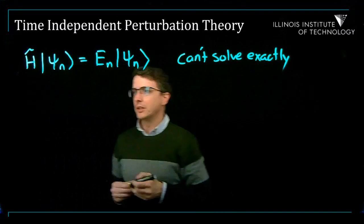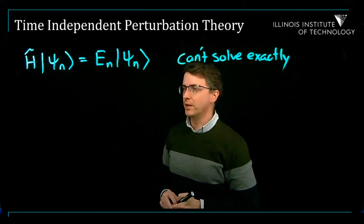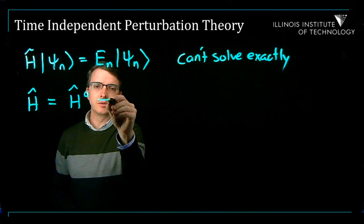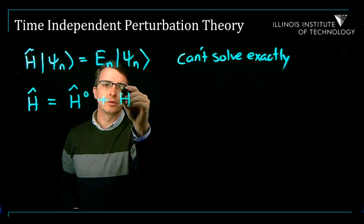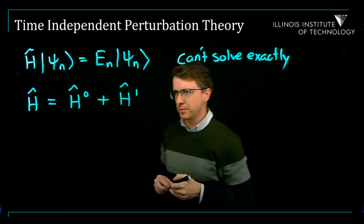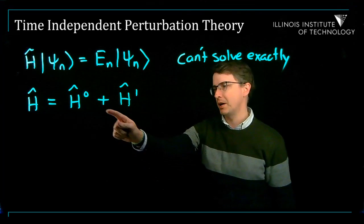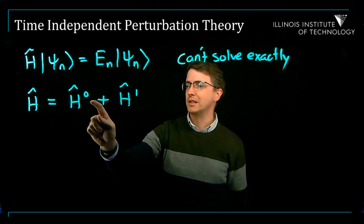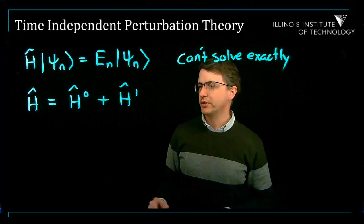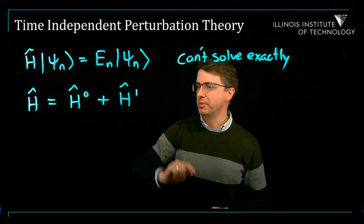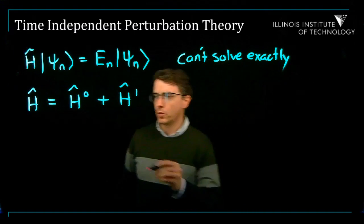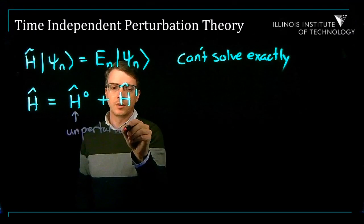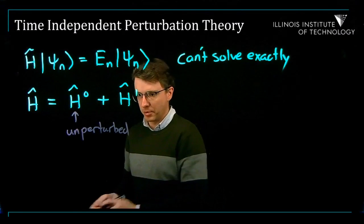But maybe this Hamiltonian looks like one you know how to solve. It is equal to something called H0 plus H1. The subscripts here are labels, not powers. H0 is the piece I know how to solve, and H1 is the perturbation. We're going to call H0 the unperturbed Hamiltonian, and H1 will be the perturbation.